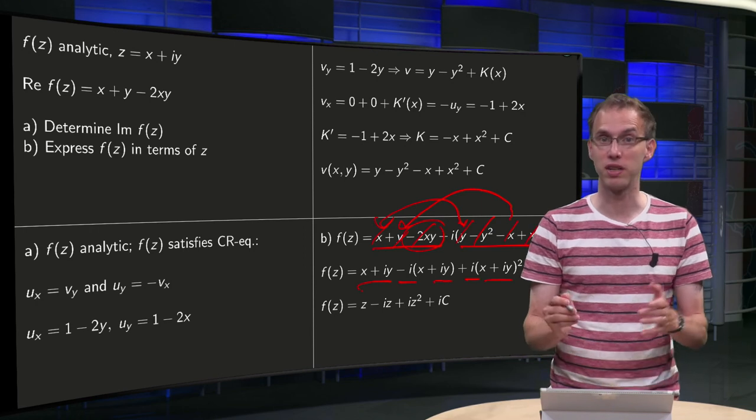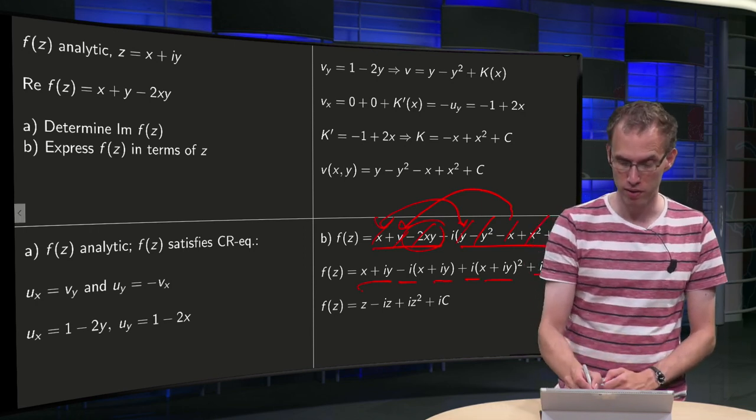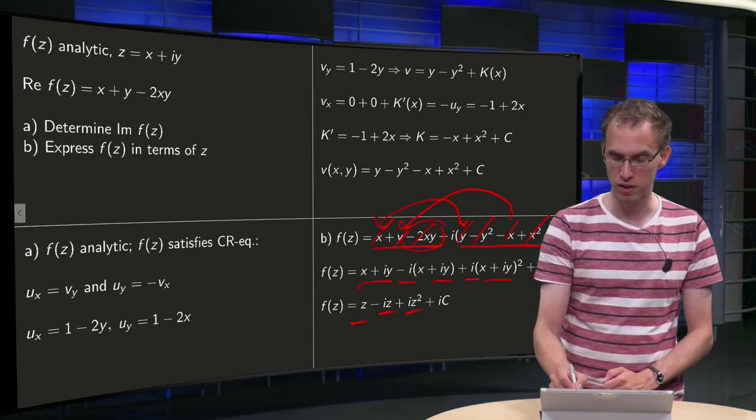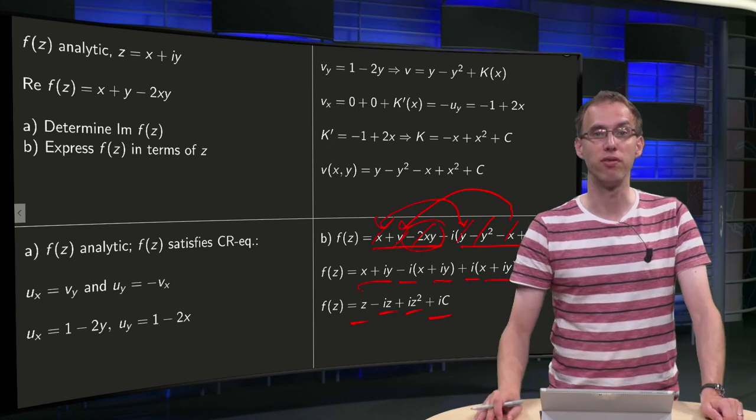And then we can express in terms of z, because z = x + iy, we get z - iz + iz² plus our constant, so there we have our f(z).